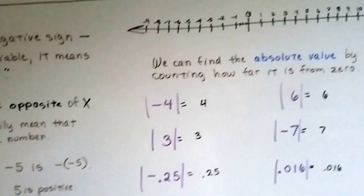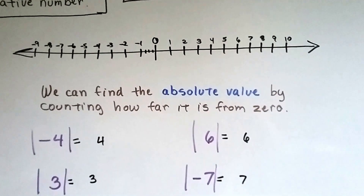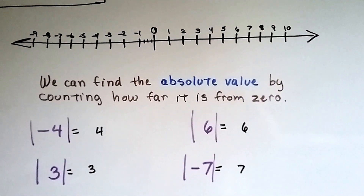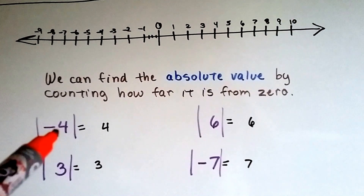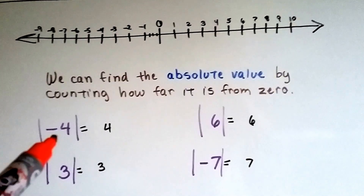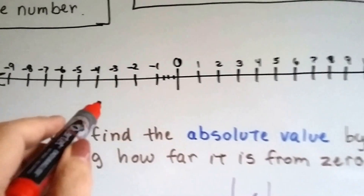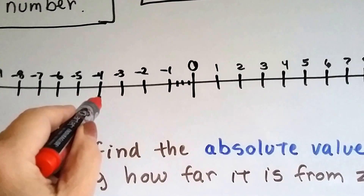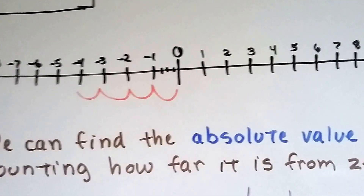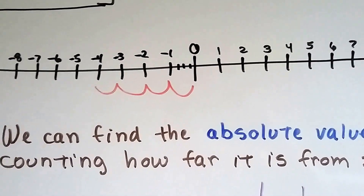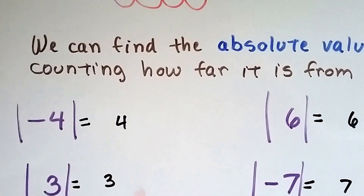So when we look at a number line like this one, we can find the absolute value by counting how far it is from zero. Negative four: the absolute value of negative four is four. Let's look at negative four — it's right here. How far is it from zero? It's one, two, three, four spaces from zero. So the absolute value of negative four is four.